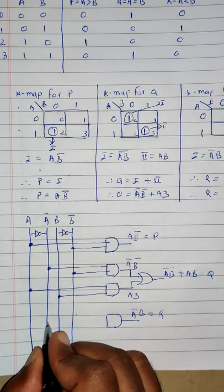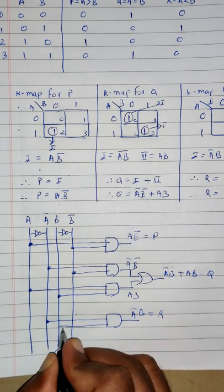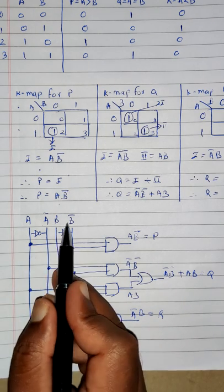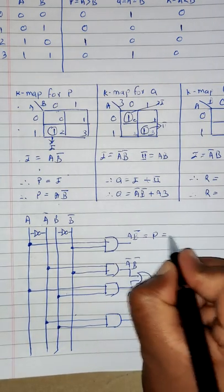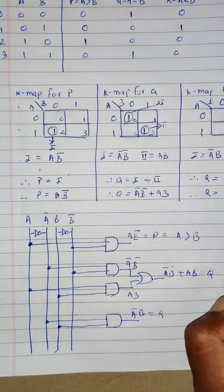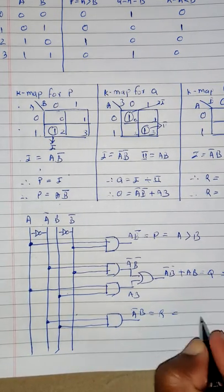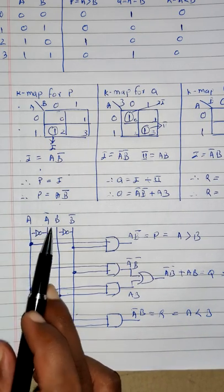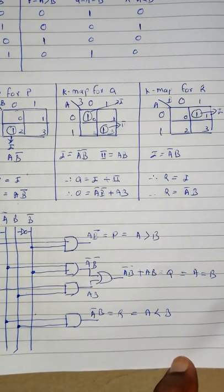Let's connect it to Ā and B. This entire circuit has two inputs A and B and three outputs P, Q and R. P is A greater than B, Q is A equal to B, and R is A less than B. With two inputs and three outputs, this entire circuit is called a 1-bit comparator circuit.